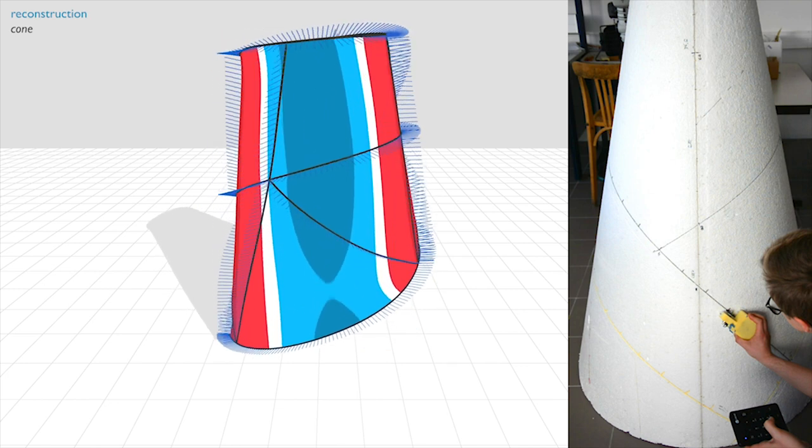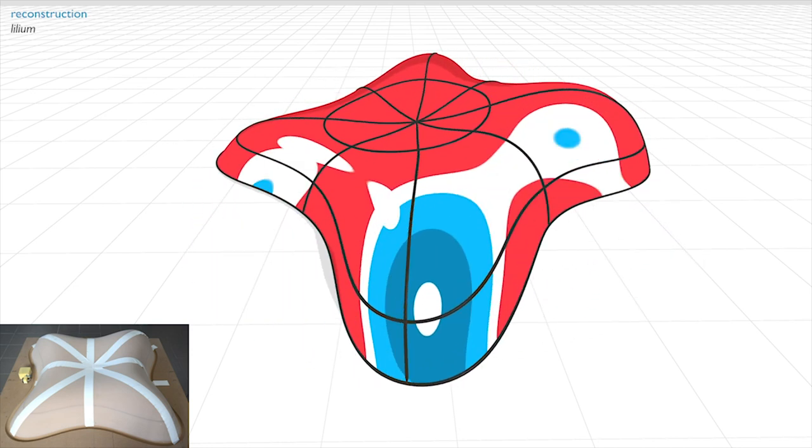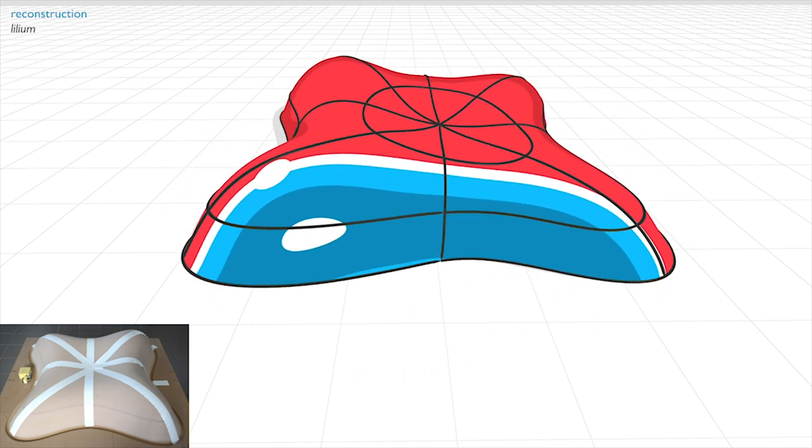We have evaluated the framework by scanning the cone and the lilium, both of which were fabricated from known ground-truth models. The error of reconstruction was less than 1%.